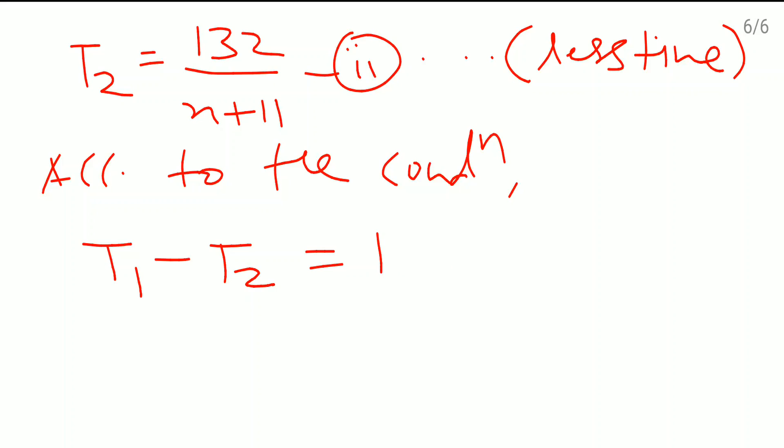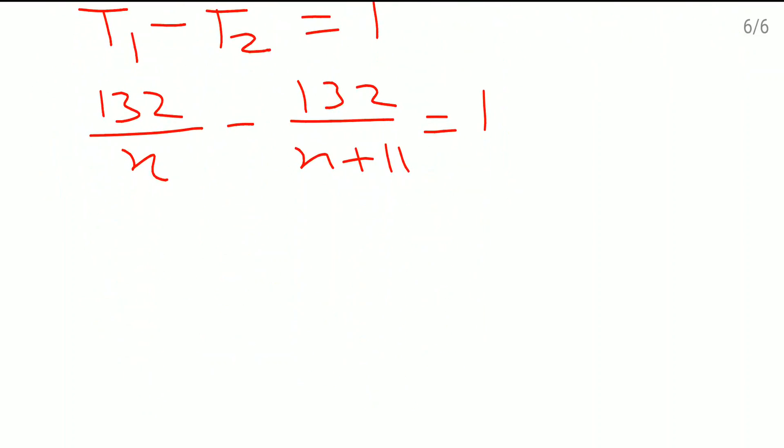So t1 is 132 by x minus 132 by x plus 11 which is equal to 1. We will do the LCM, but before that we will take 132 common. So here 1 by x minus 1 by x plus 11 which is equal to 1.